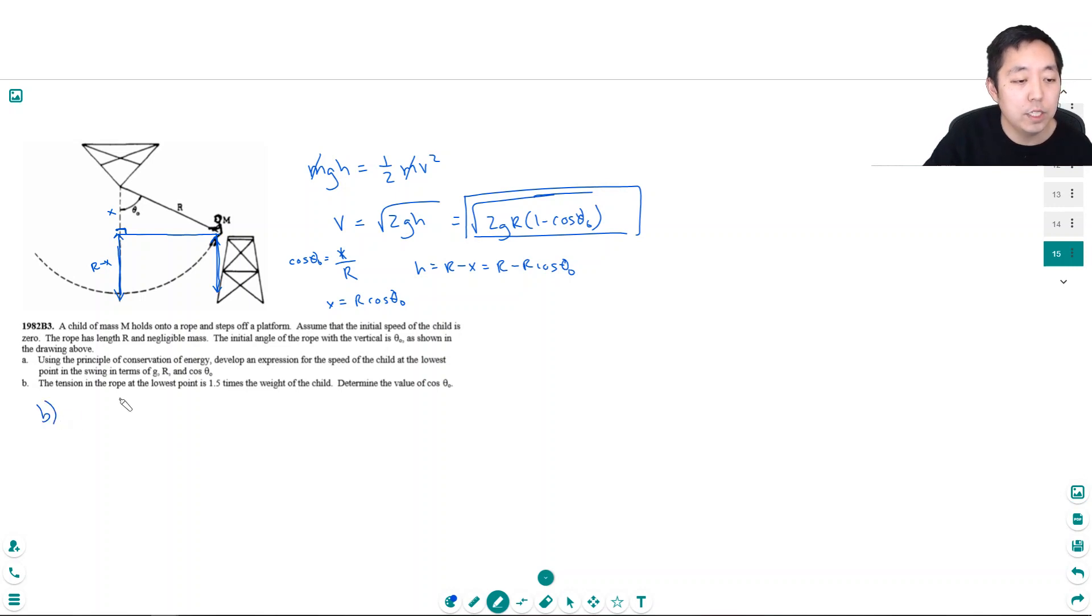B. The tension in the rope at the lowest point is 1.5 times the weight of the child. Determine the value of cosine theta not.